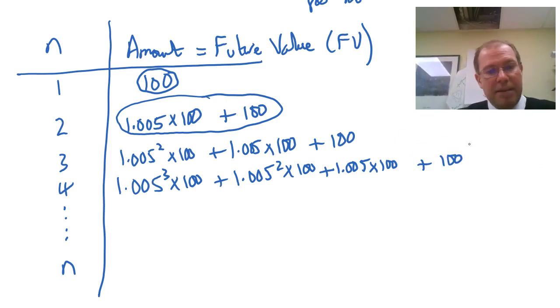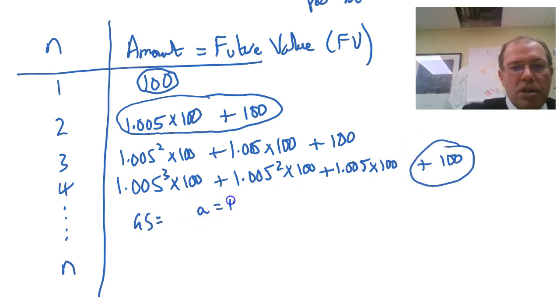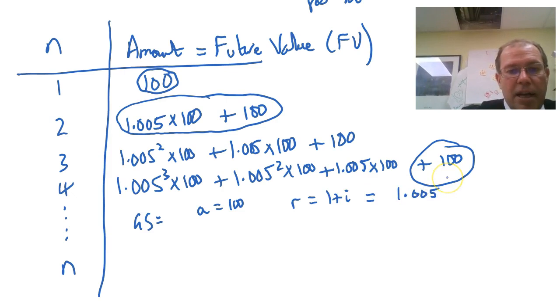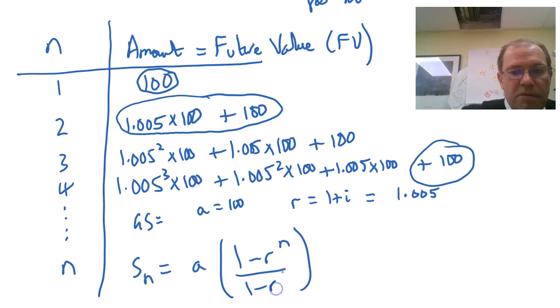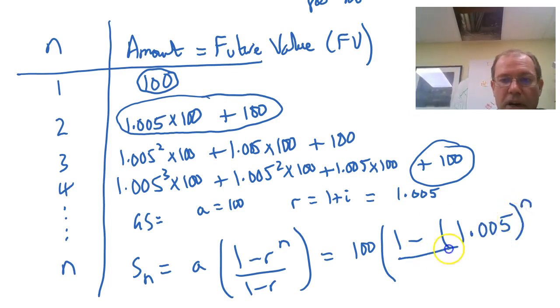So the amount I've got after N is actually, you can see the pattern here. This is a geometric series. The starting number is A, so A is 100. The common ratio is 1 plus i, which is 1.005. And we know that the sum of the first N terms of a geometric progression is A times 1 minus R to the N over 1 minus R.